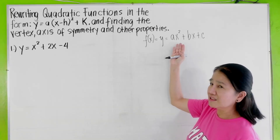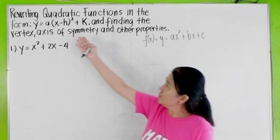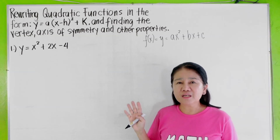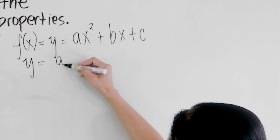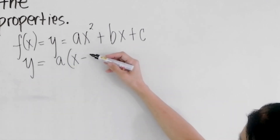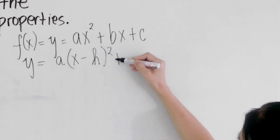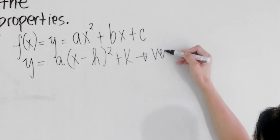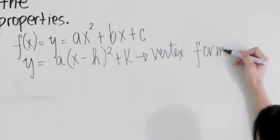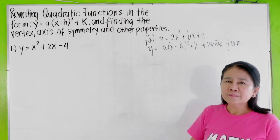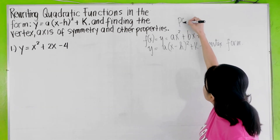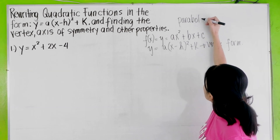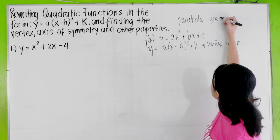Why do teachers want us to rewrite it from its general form to the vertex form? When a quadratic function is written in its vertex form — y equals a quantity x minus h quantity squared plus k — this is the vertex form. We can easily identify the different properties of the parabola. A parabola is the graph of a quadratic function.